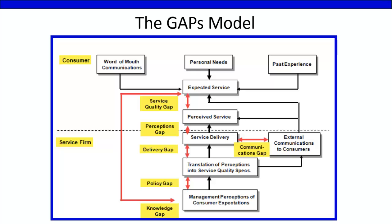GAP 6: The Service Quality Gap. The Service Quality Gap is the difference between what customers expect to receive and their perception of the service that is actually received. GAP 6 is the most important of all. Hence, the main goal is to improve service quality and close this gap as much as possible.